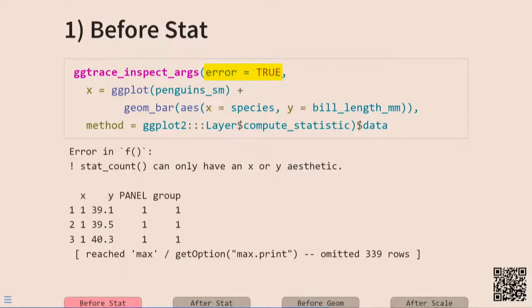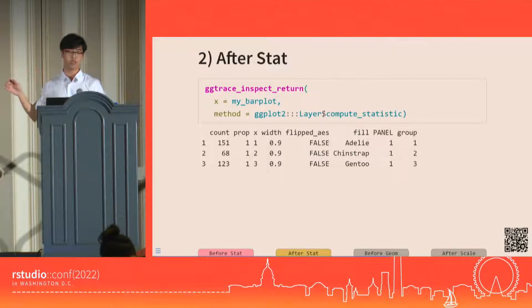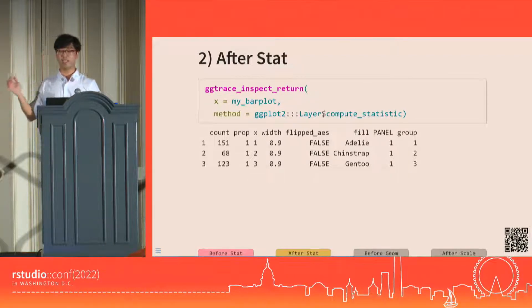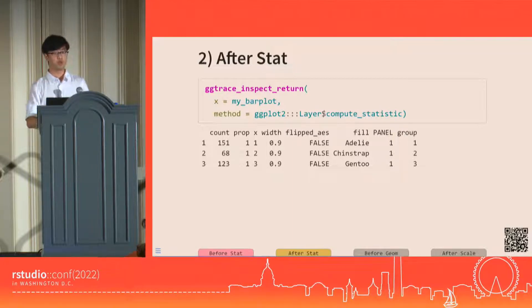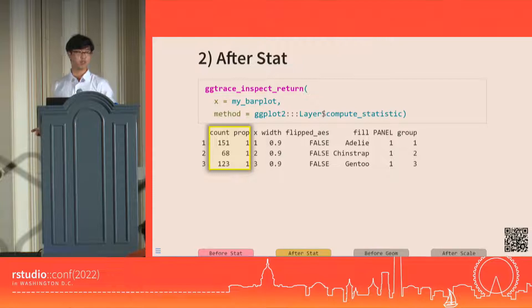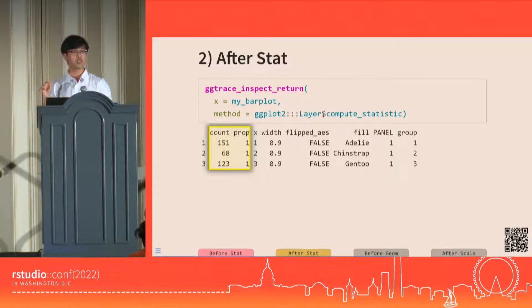But as long as the stat has what it needs, then it will transform the data, spit it back out for us to see in the after stat stage. At this point, we see that the data basically underwent a group by and summarize. So we have one row for each bar and new variables like count and prop.